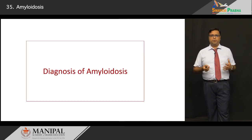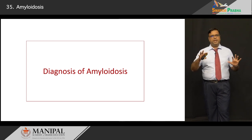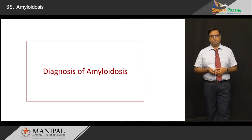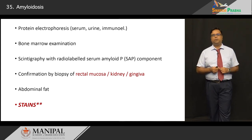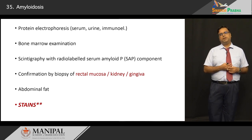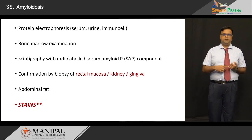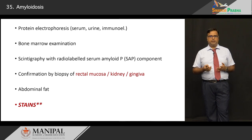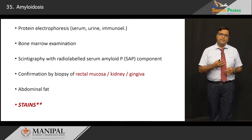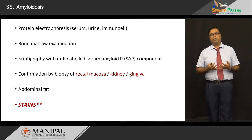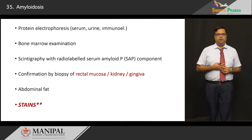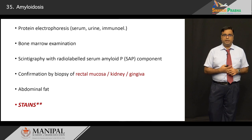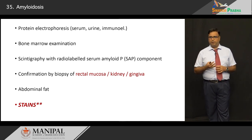The diagnosis of amyloid: clinically, the index of suspicion is poor and organ involvement presents very vaguely. Electrophoresis — using serum or urine — is the first step since these are proteins. Bone marrow examination may reveal sheets of plasma cells and amyloid. Radiolabeled scintigraphy can detect certain components of amyloid but not all. Biopsy is confirmatory but invasive; common biopsy sites include abdominal fat, rectal mucosa, gingiva, or the kidney.